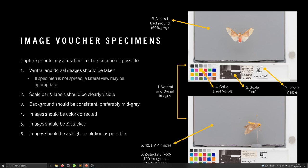Another optional step is z-stacking. I z-stack everything because I want the best view of all the characters on the specimen. My z-stacks are generally 60 to 120 images per side of the specimen, varying depending on the specimen's size and other characteristics. Of course, images should be as high resolution as possible — my camera can produce up to 42.1 megapixels, and you should shoot as high as you can afford.